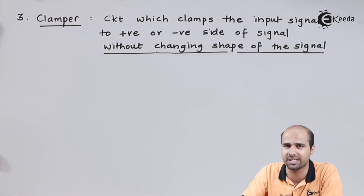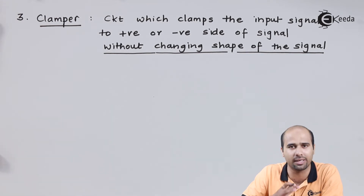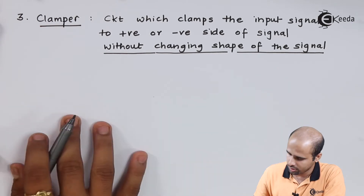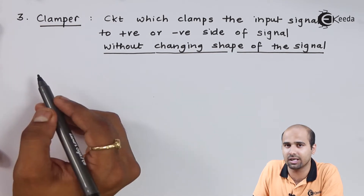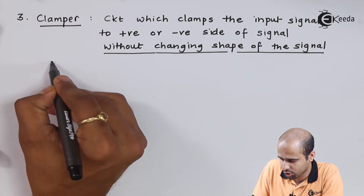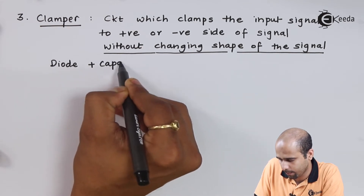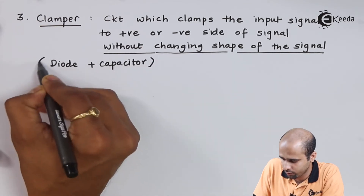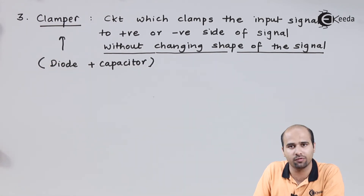In the clamper circuit, we have a positive clamper and a negative clamper. If you want to clamp towards the positive side we use the positive clamper; if towards the negative side, we use the negative clamper. This is all about the clamper circuit. Here, another passive component used along with the diode is the capacitor — so diode plus capacitor gives you the clamper circuit. This is the third application of the diode.